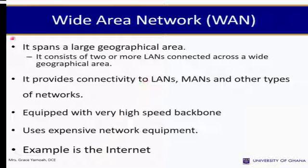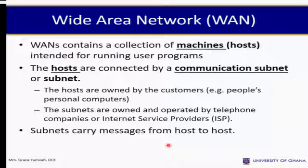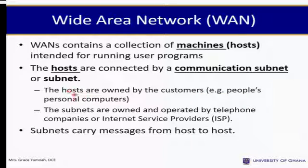Wide Area Network (WAN) spans a large geographical area. It consists of two or more LANs connected across a wide geographical area and provides connectivity to LANs, MANs, and other types of networks. Equipped with a very high-speed backbone, it uses expensive network equipment; a typical example is the internet. A WAN contains a collection of machines termed hosts, intended for running user programs. Hosts are connected by a communication subnet. The hosts are owned by customers — for example, people's personal computers — while subnets are owned and operated by telephone companies or internet service providers (ISPs). Subnets carry messages from host to host.